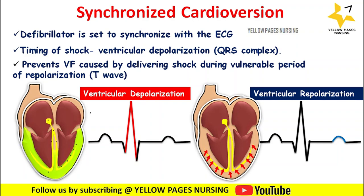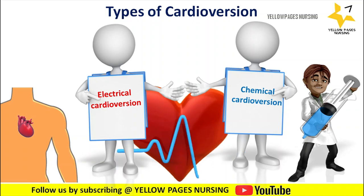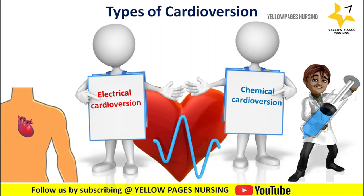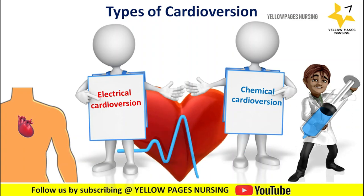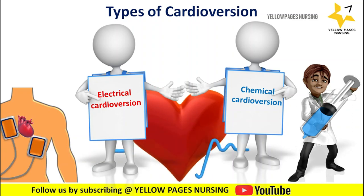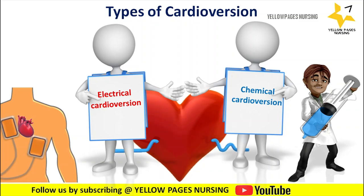The reason the shock is given during ventricular depolarization is to prevent ventricular fibrillation caused by delivering a shock during the vulnerable period of repolarization. There are two types of cardioversion: electrical cardioversion and chemical cardioversion. Chemical cardioversion refers to taking anti-arrhythmia medications to restore the heart's rhythm to normal. Such medications work by altering the heart's electrical properties to suppress abnormal rhythms. When chemical cardioversion is unsuccessful, electrical cardioversion is the choice.